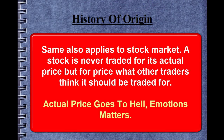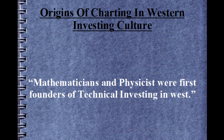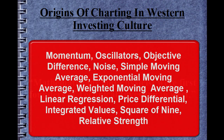Western methods of charting were found by different mathematicians and physicists. Even a simplistic look at the names of technical terms and indicators can give you that idea: Momentum, Oscillators, Objective Difference, Noise, Simple Moving Average, Exponential Moving Average, Weighted Moving Average, Linear Regression, Price Differential, Integrated Value, Square of 9, and Relative Strength, to name a few. These are terms from Mathematics and Physics, and they mean the same in technical analysis as they do in Mathematics.